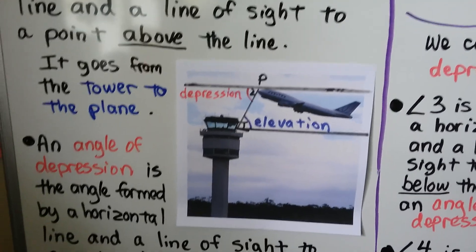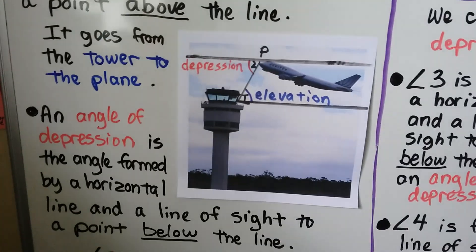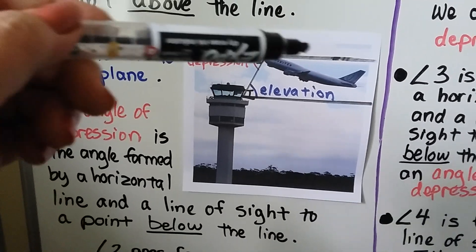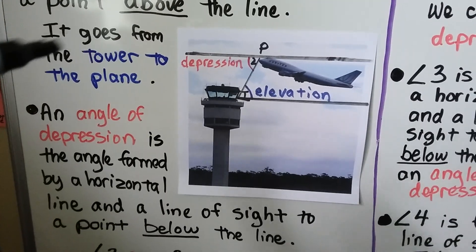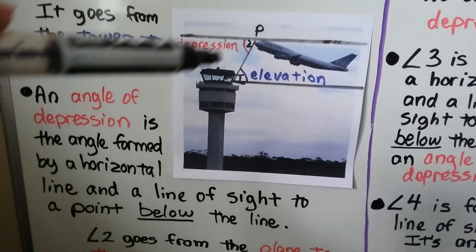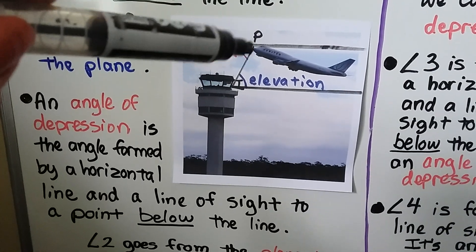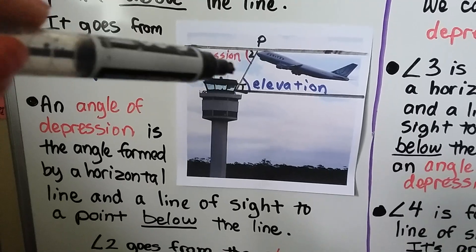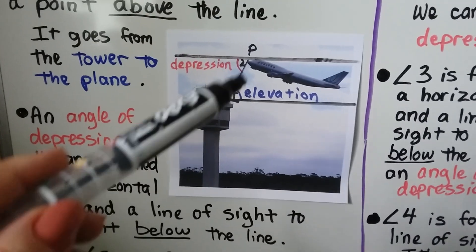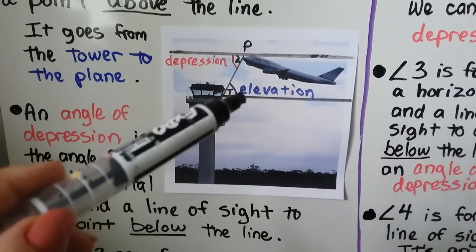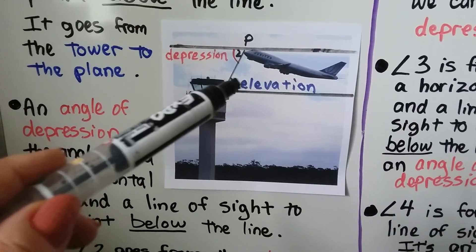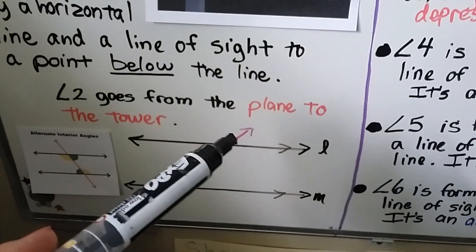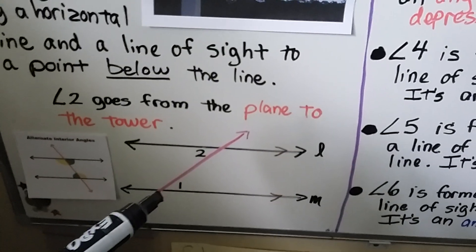And the angle of depression is an angle formed by a horizontal line and a line of sight to a point below the line. So for the pilot to look at the tower, that would be the angle of depression — angle 2, going from the plane down to the tower.